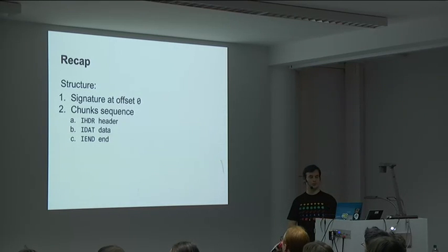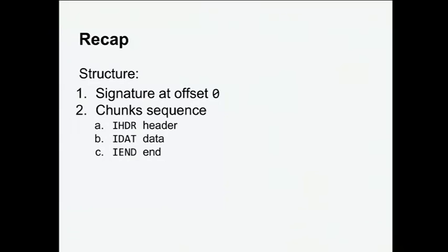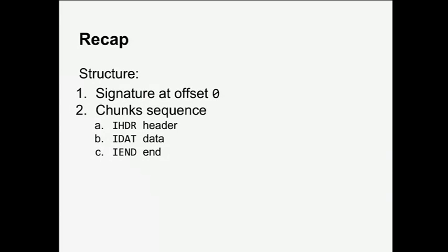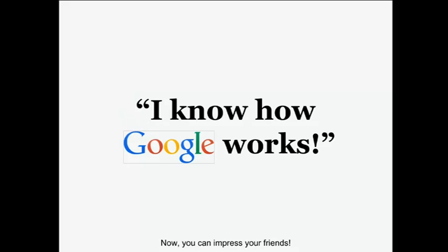Recap on the PNG file format: signature at offset zero, then a sequence of chunks — in our case header, data, and end. The end chunk is always strictly the same: it's empty but with the fixed type IEND. So now you can claim that you know how Google works by pointing at this picture and impress your friends.